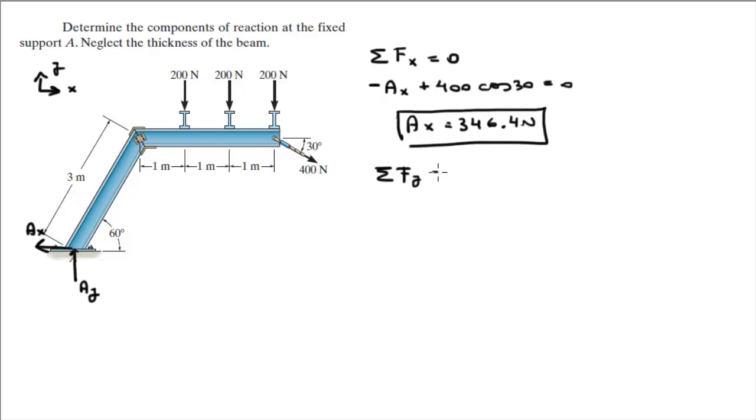Sum of the forces on the Y is equal to 0. In the Y we got AY coming up minus 200 and we got 200 times 3. I'm not going to write minus 200 three times, that's just dumb. Minus 400 times the sine of 30, which is the Y component of this 400N force, and the X component will be this one.